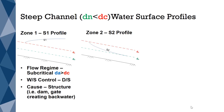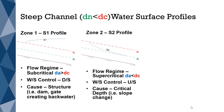An S2 profile is formed in Zone 2, where the flow regime is supercritical, since the water surface is less than critical depth. A supercritical flow condition occurs when the actual depth is less than critical depth. Flows that are supercritical are always controlled upstream. For an S2 profile to occur, there needs to be critical depth control on the upstream side. The most common occurrence for an S2 profile is a slope change.